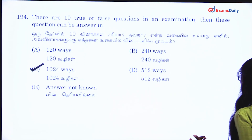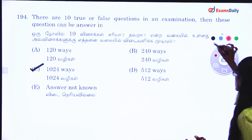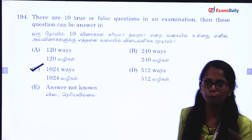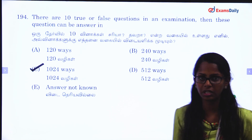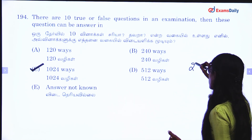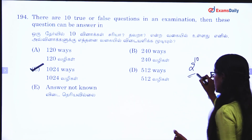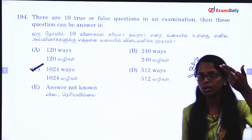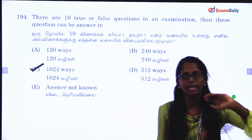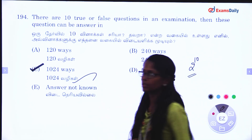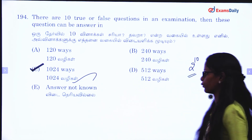Next question. There are 10 true or false questions with 2 options each and 10 questions. So the answer is 2 to the power of 10, which equals 1,024.